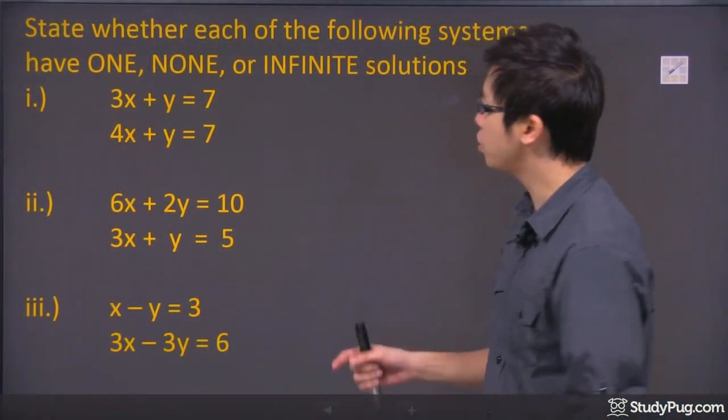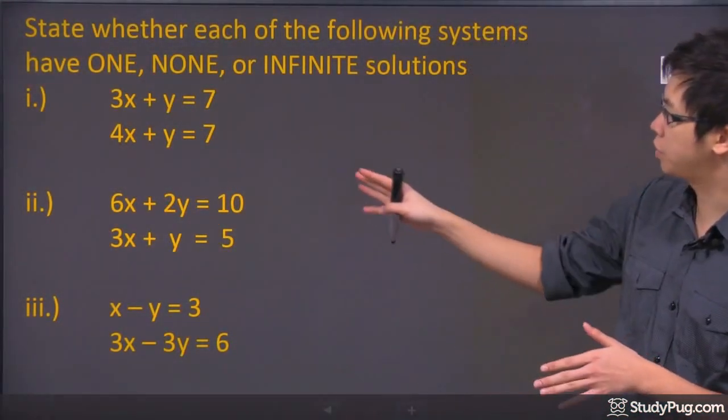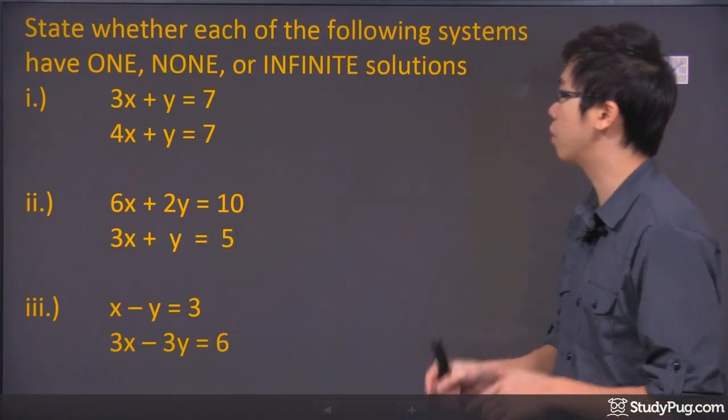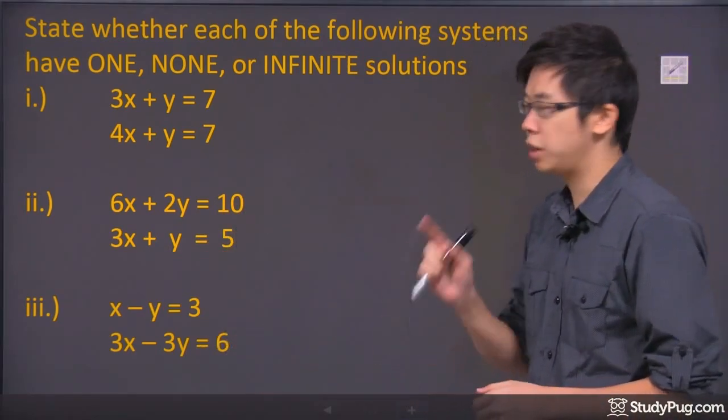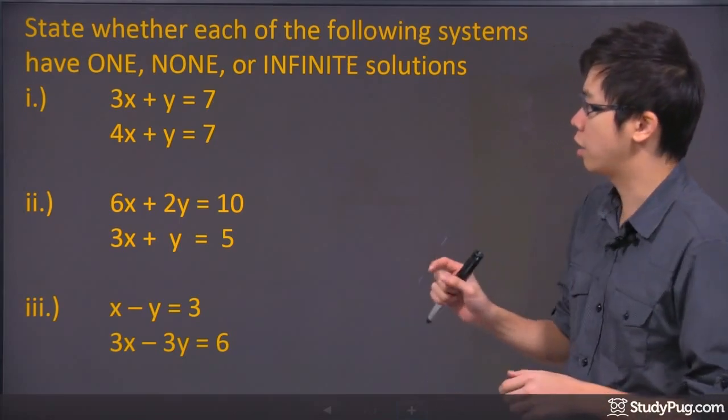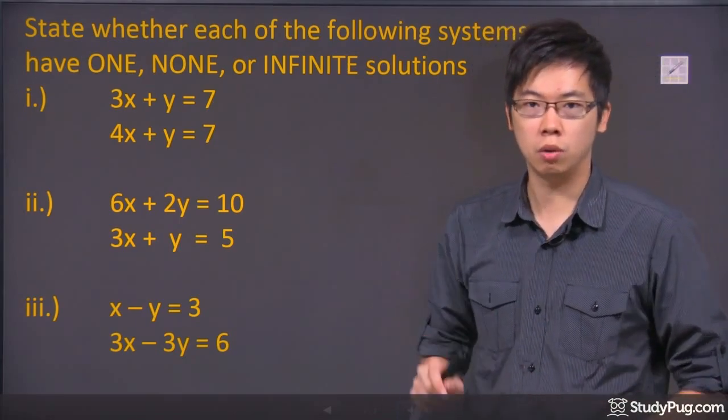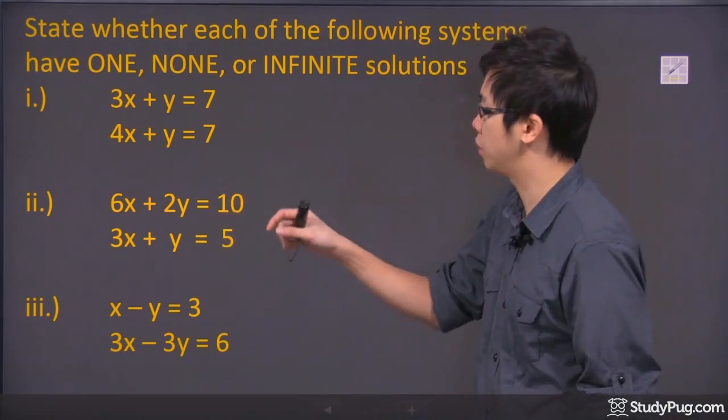Hi, welcome to this question right here. We're trying to state which of the following systems has either one solution, no solution, or infinite solutions. The idea is simple: if you can solve it in terms of y equals mx plus b, you're able to see everything. So let's go ahead and figure everything out here.